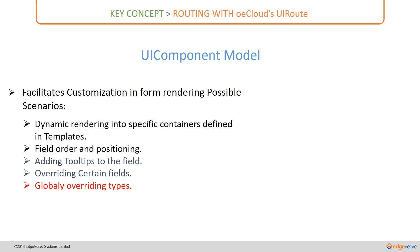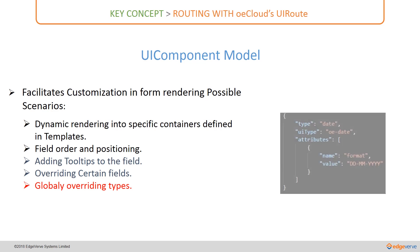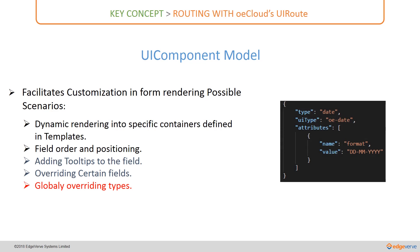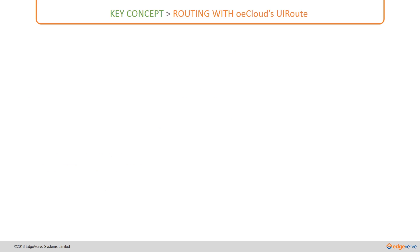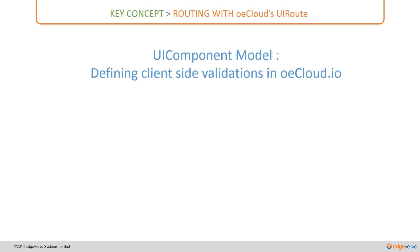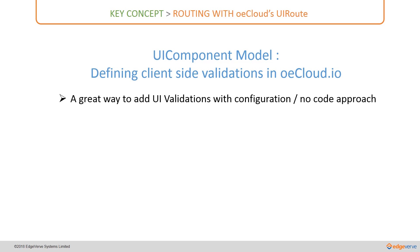Finally, with respect to globally overriding types: there is a default mechanism by which a date field gets rendered, but if you want to attach a different kind of formatting you can do that with the attributes array. This is how globally overriding types works. OECloud.io's UI component model brings in several interesting options to define client-side validations through a configuration and no-code approach.